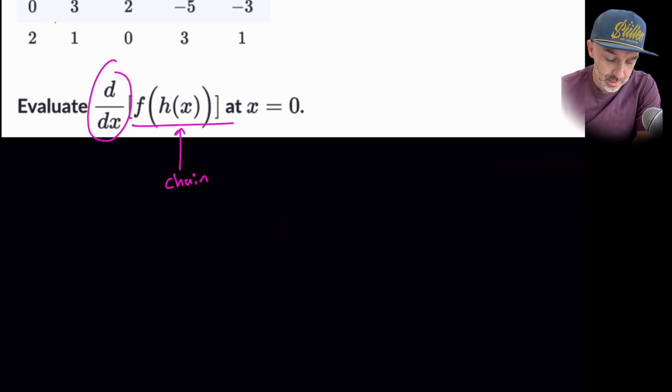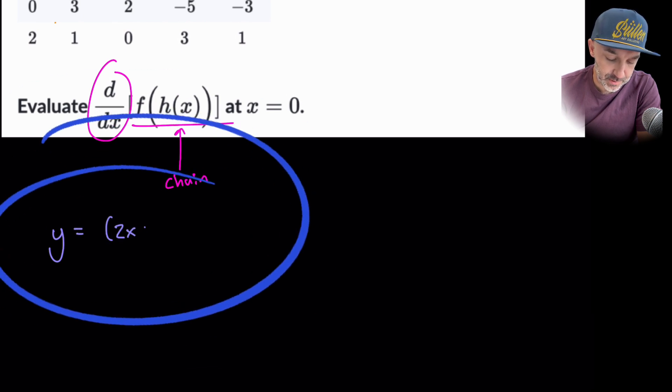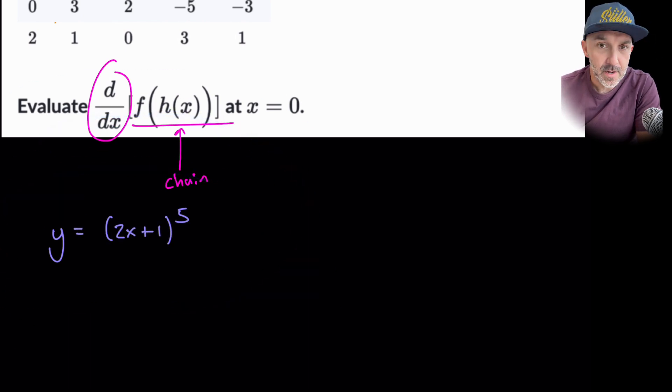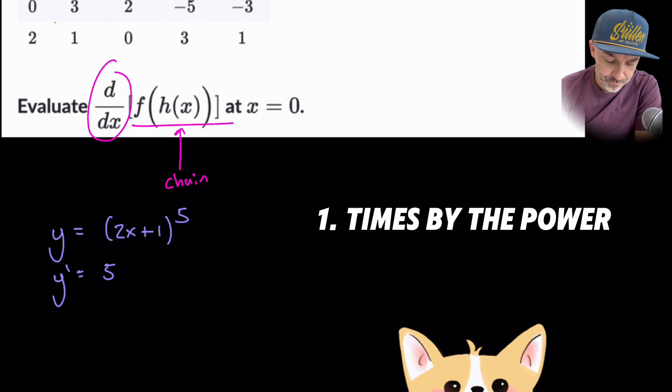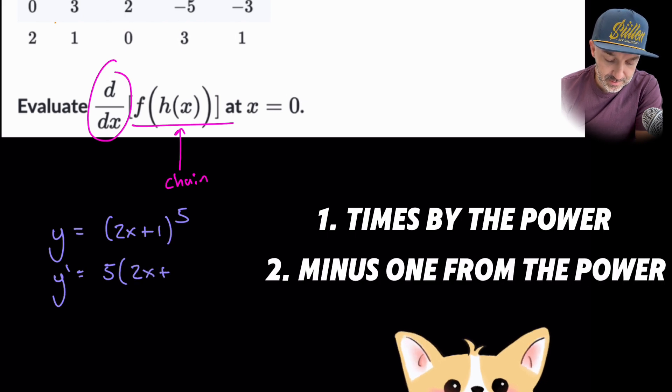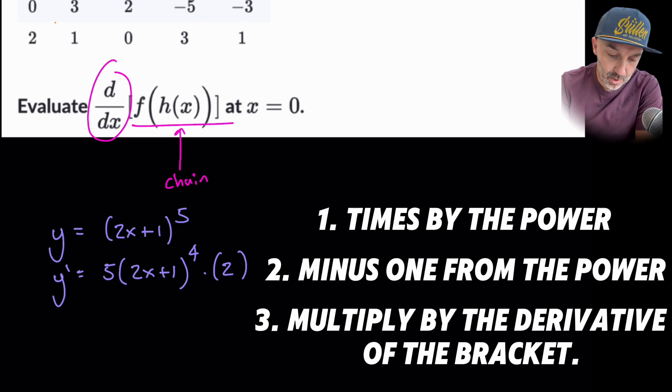Think about when we were doing straightforward chain rule problems when we said like y is equal to, let's just put an expression here, something rather simple. Okay we have a function 2x plus 1 inside another function which is the parentheses to the power 5. And we said the quick way of doing chain rule was to times by the power, everything in the bracket stays the same, take one off that power but then multiply by the derivative of the bracket and the derivative of the bracket was 2.